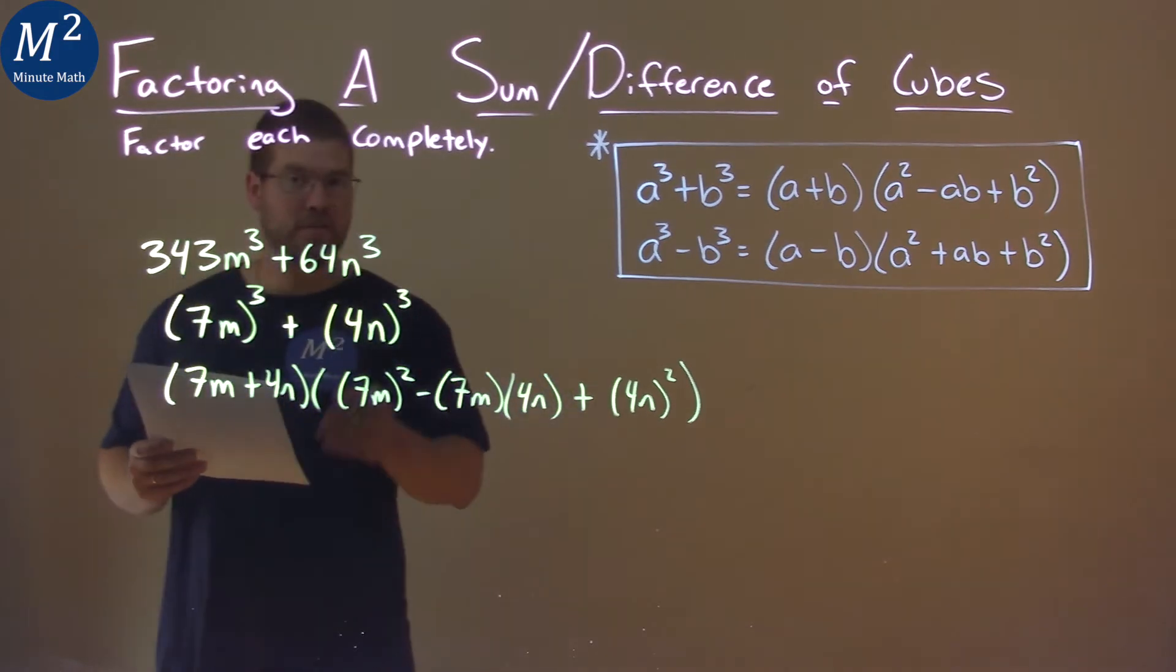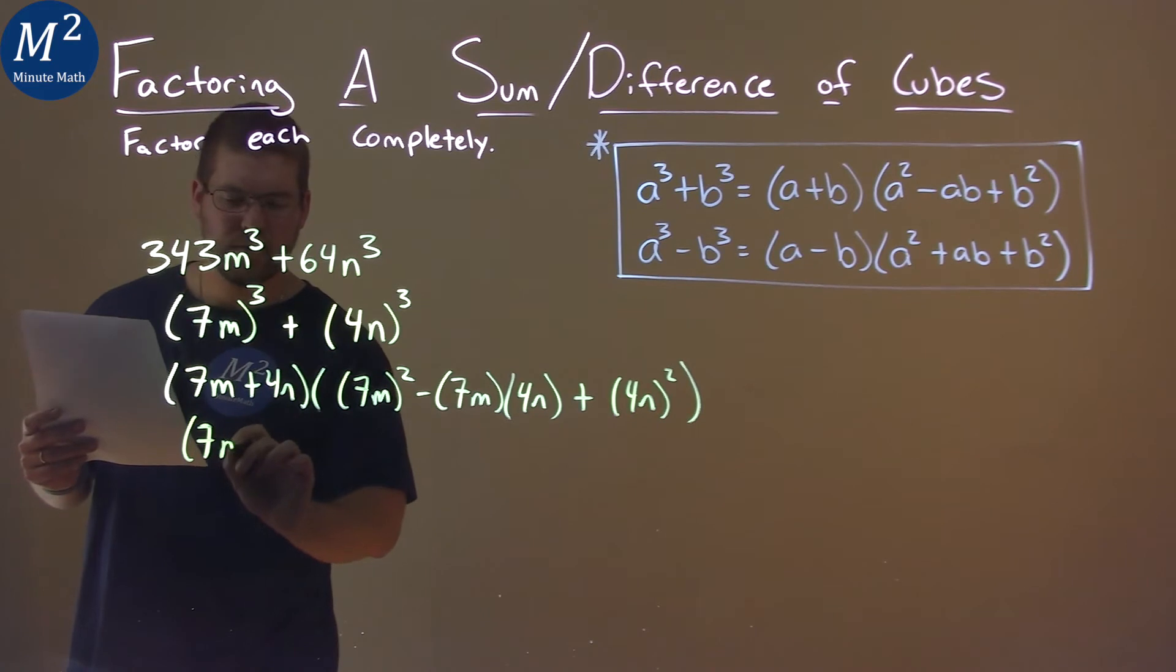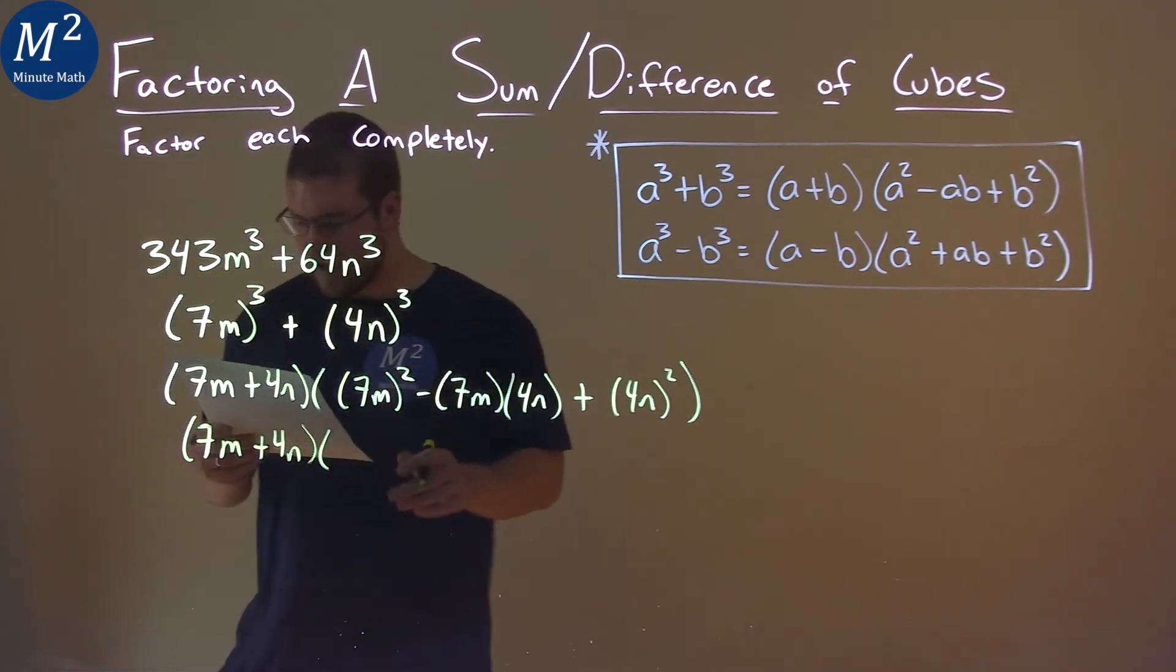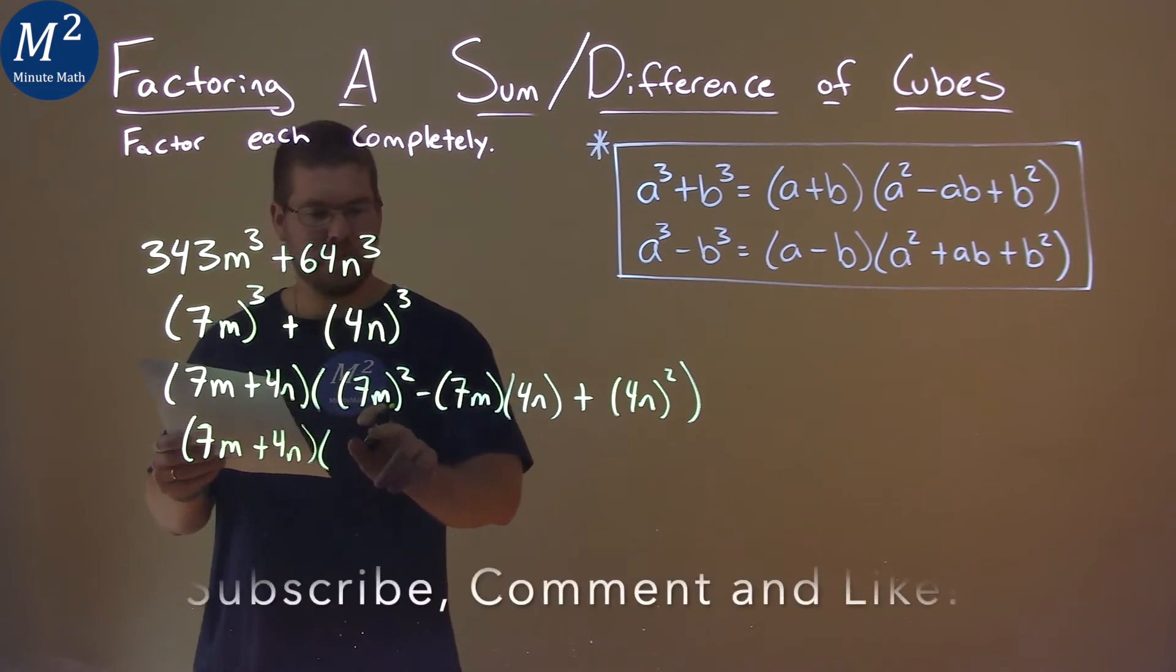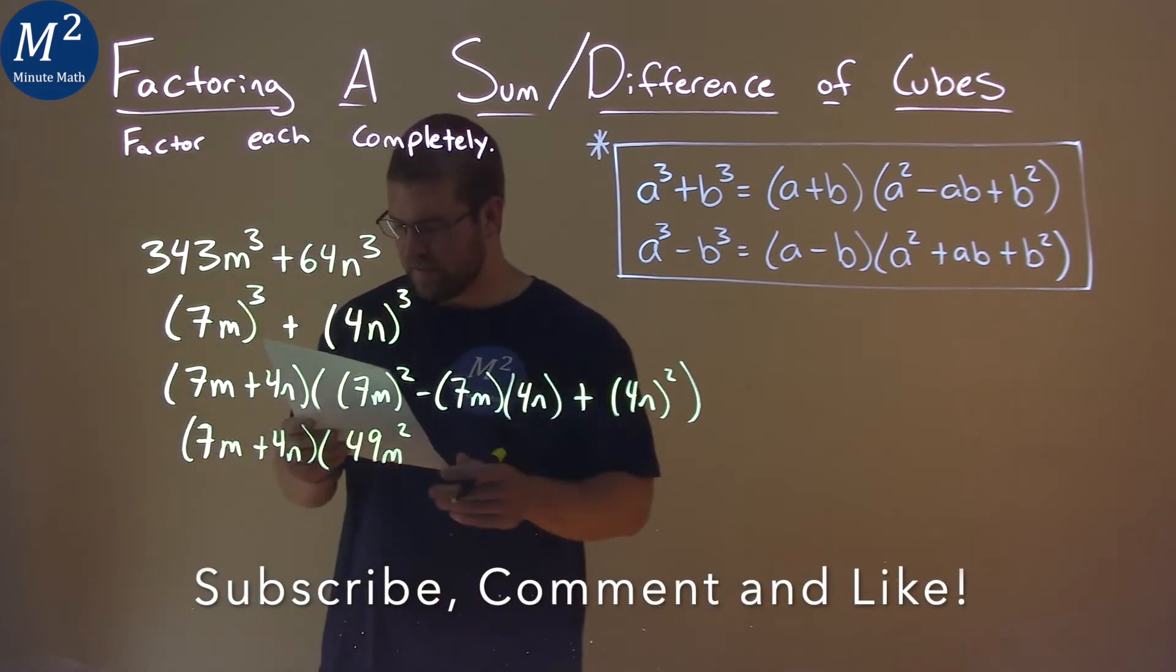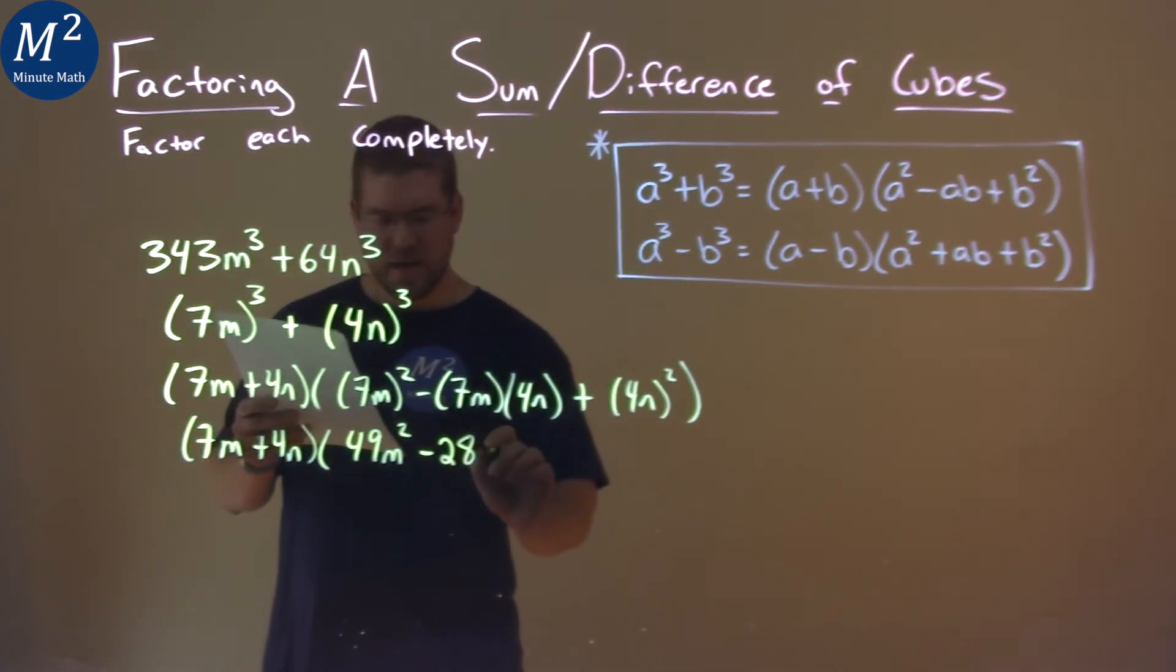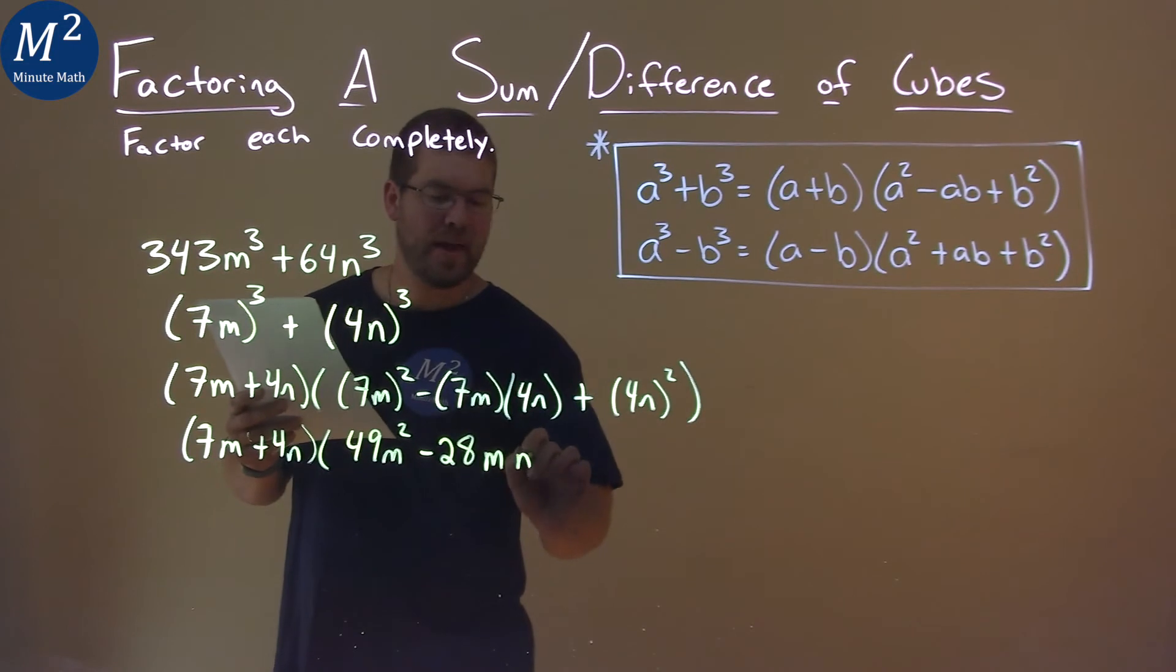And now we have the joys of simplifying. Well, the first part stays the same if I can write it. 7m plus 4n. But 7m squared in the second parenthesis is 49m squared. 7 times 4 gives us 28. So we subtract 28 here. And we write m then n.